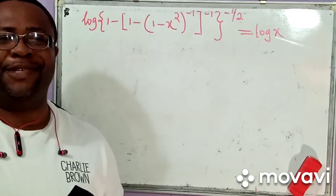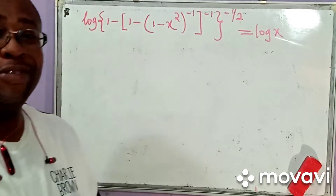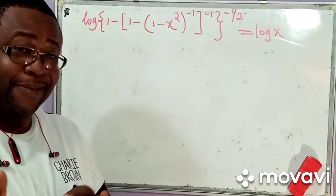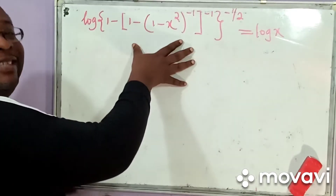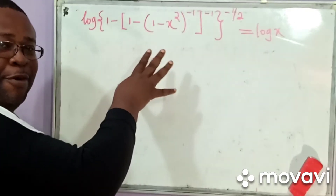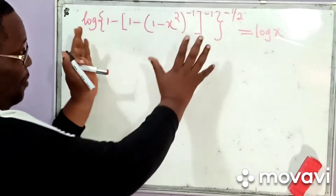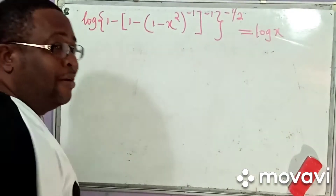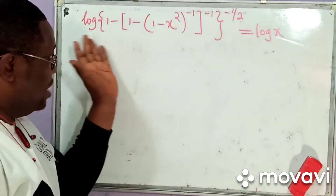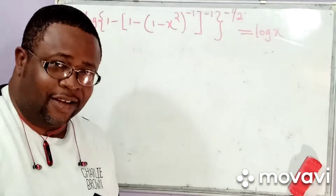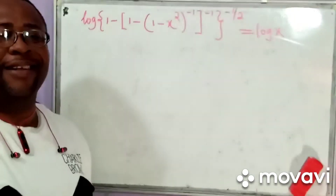Hello, welcome to our classroom. Now in our classroom today, we want to do something very, very simple, quickly. We want to show that the rule of this complex expression in logarithmic form is going to boil down to log x — that the rule of this is going to simplify down to the logarithm of x. This is CETV and you are highly welcome.